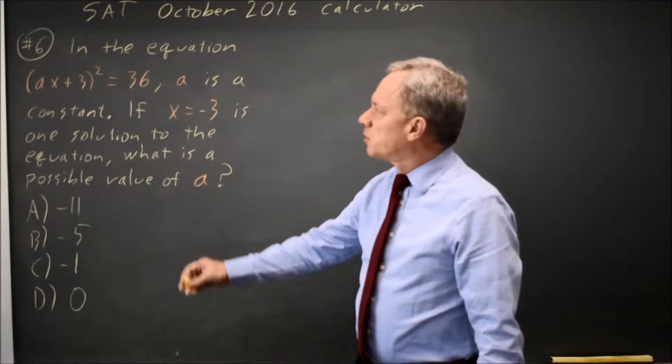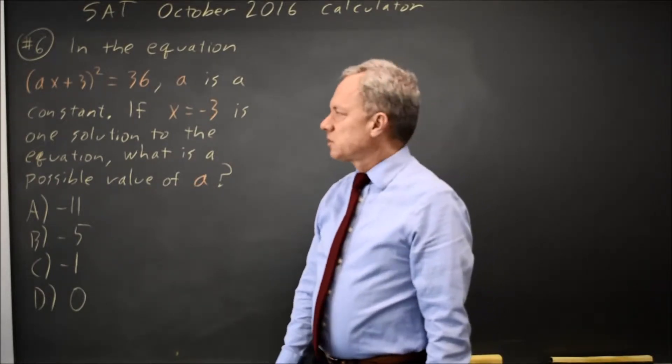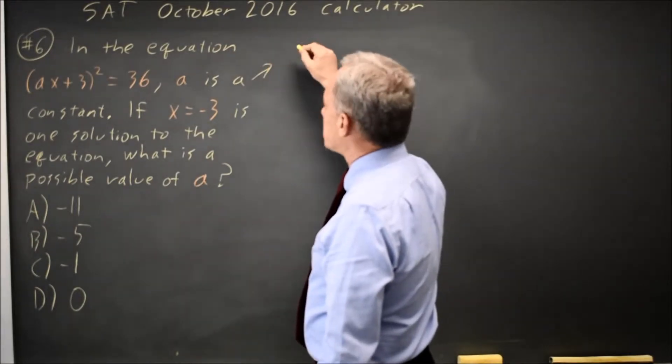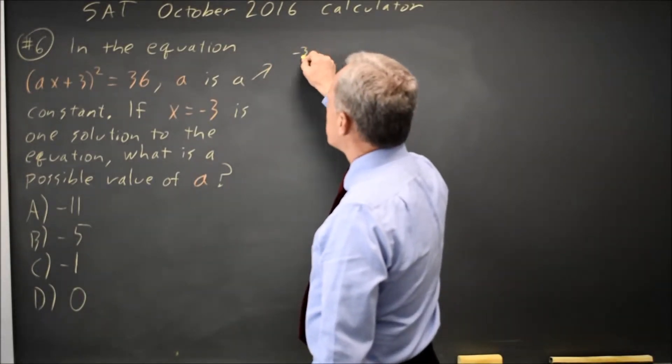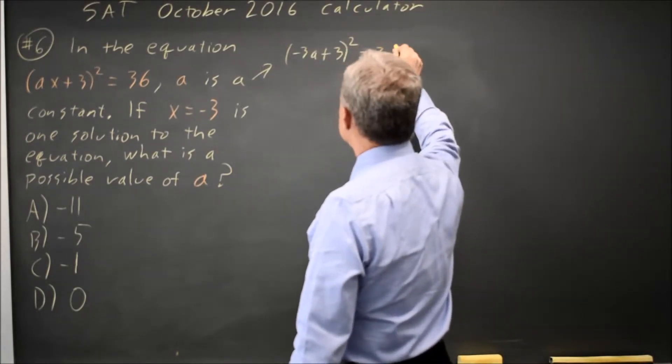The College Board gives us a quadratic equation where a is a constant and says x equals negative 3 is one solution, and they want to find the value of a. I'm going to substitute in negative 3 for x. I have negative 3a plus 3 squared equals 36.